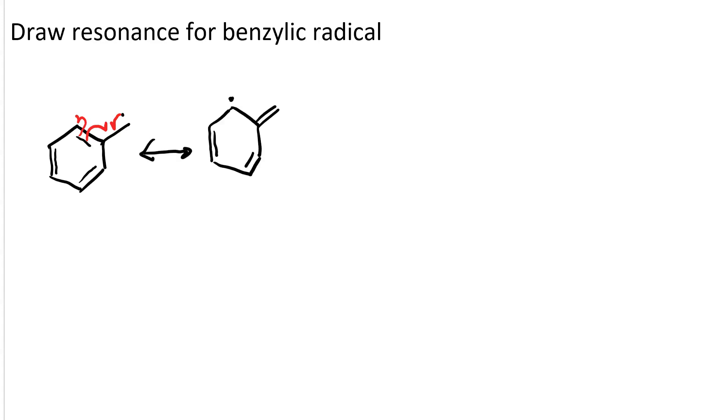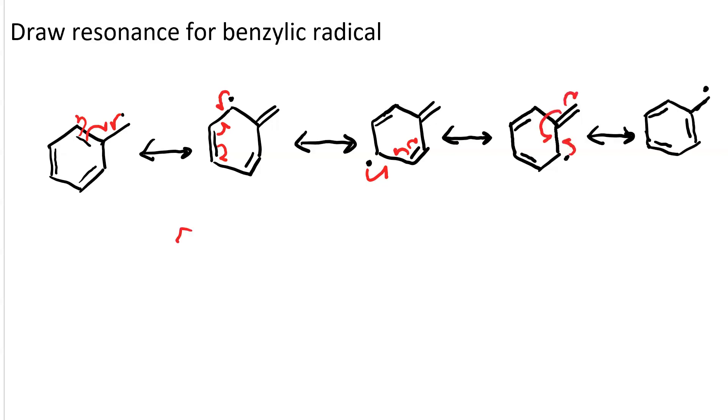How many other resonance structures can you draw? Pause your video and give it a try. See if you can get all of them. Then unpause it to see what I got. I get five resonance structures. Just the same as the number of resonance structures you get for a benzylic cation.